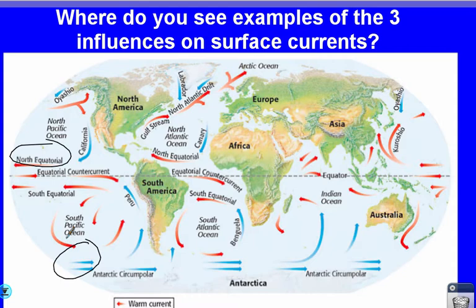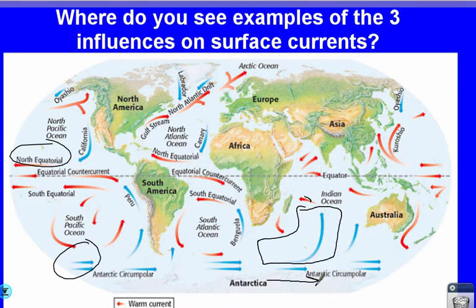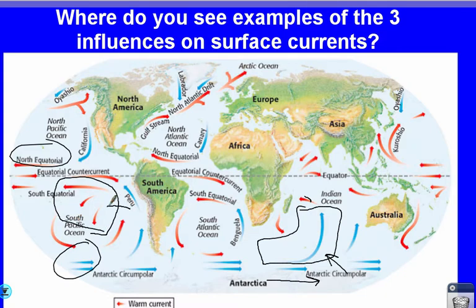Let's look at how the Coriolis effect is affecting these currents. Take this cold water current — originally moving from west to east, it started to curve upward. That curve isn't caused by running into anything; it's simply because the Earth is rotating. That's a perfect example of the Coriolis effect. Over in the South Pacific, you can see currents that were moving in one direction and then curved downward because of the Coriolis effect.